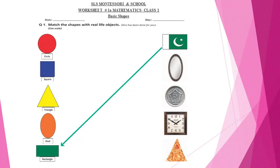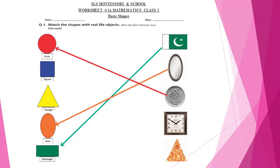The next object is a mirror. What kind of shape does it have? Yes, it is like an oval, so you will match it with an oval. Next, the coin — it is round like a circle, so match it with a circle. Next, the clock — it is like a square, so you will match it with a square.